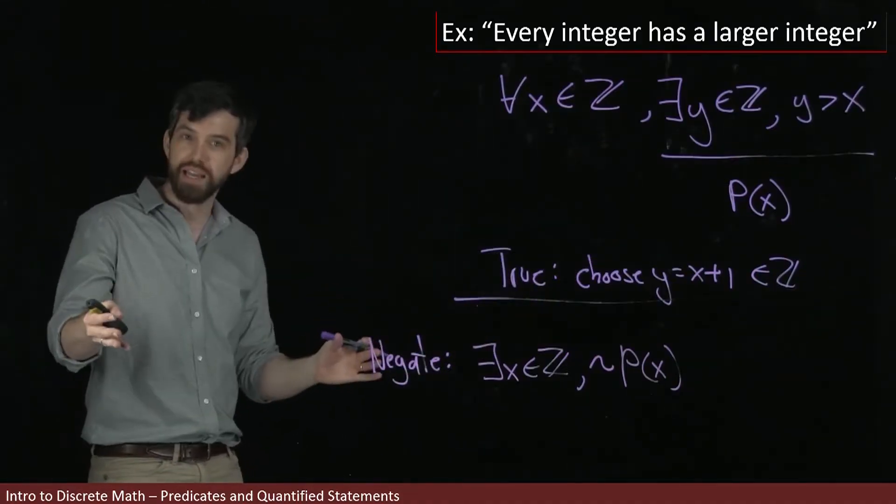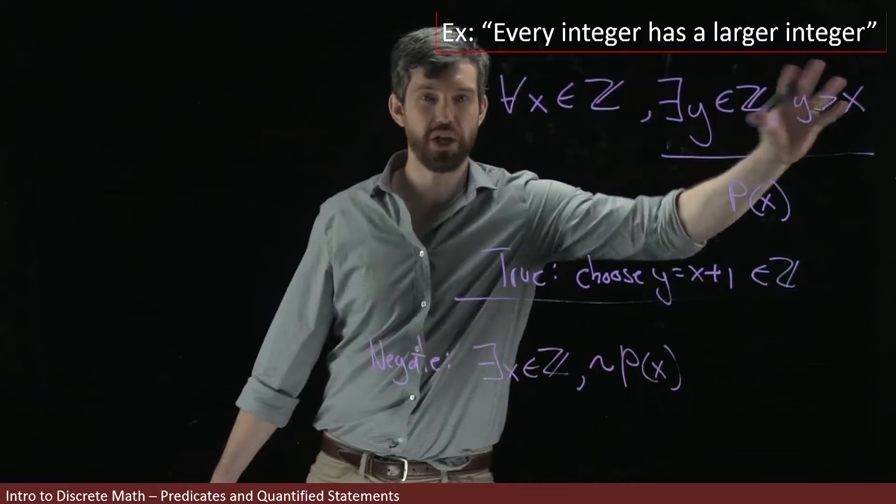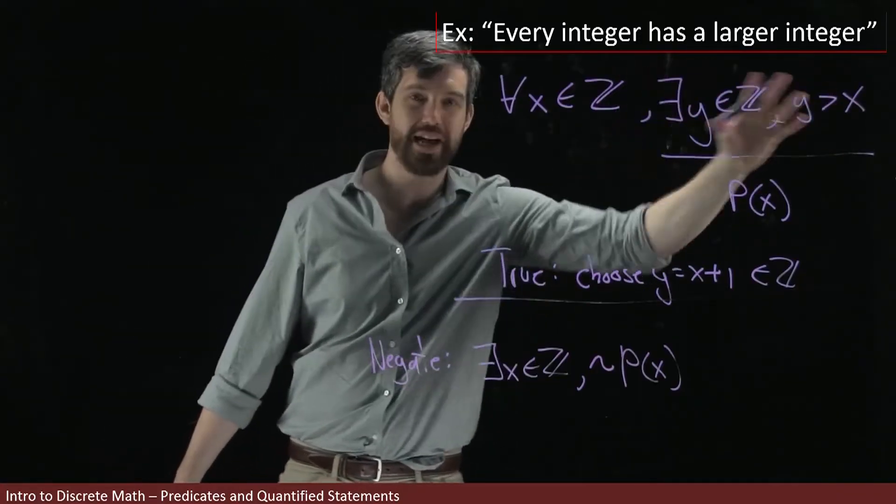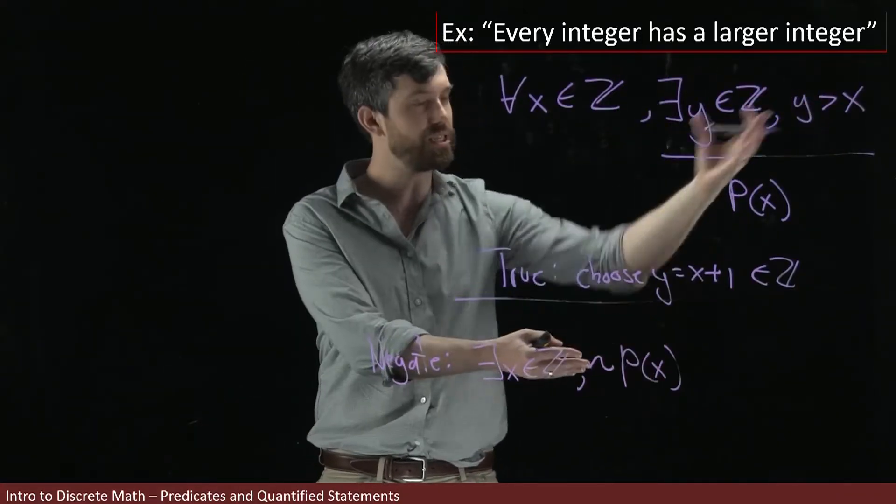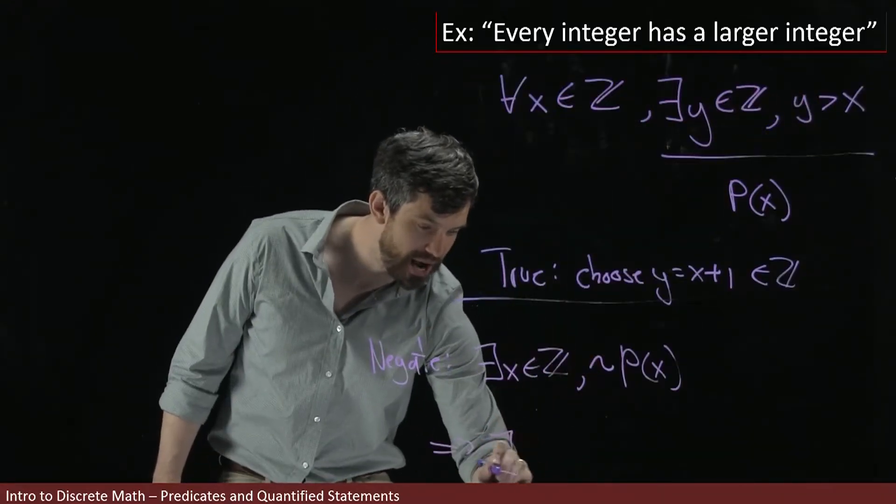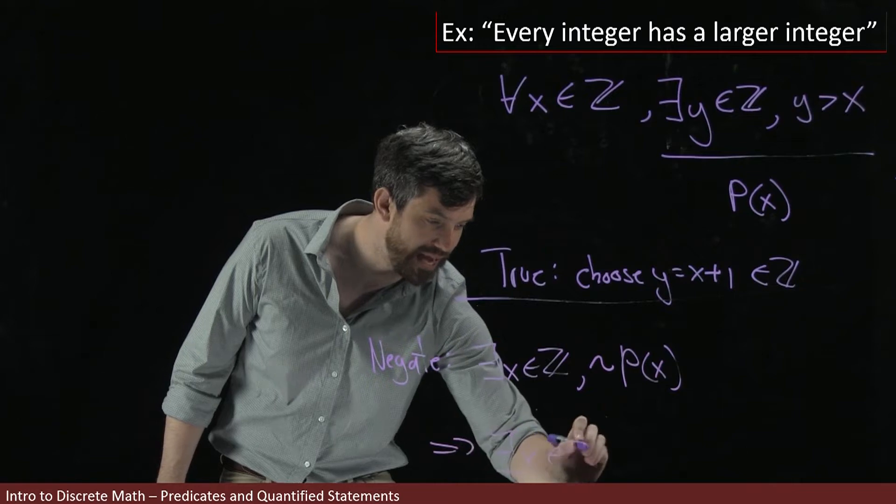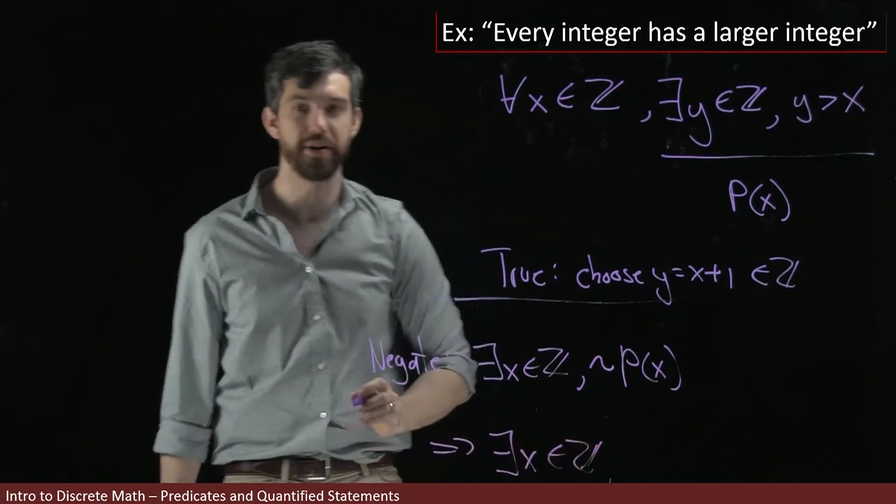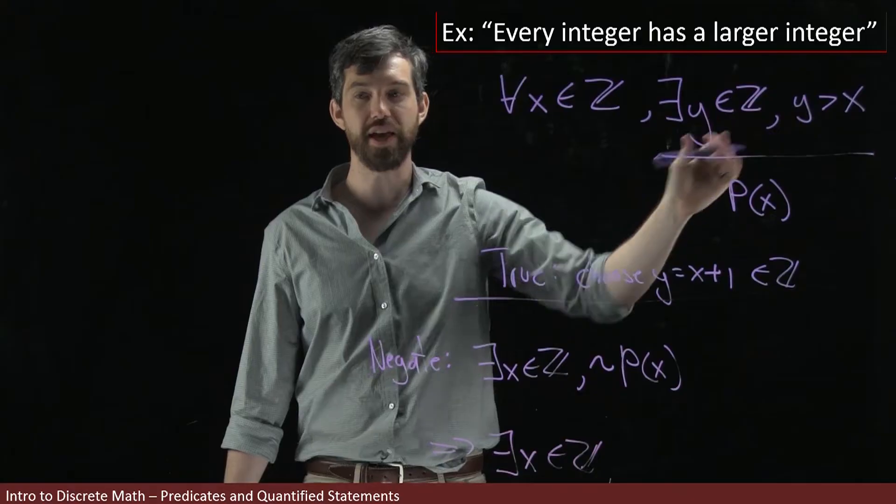But as we've seen, p of x is actually its whole own thing. So if I'm negating p of x, I can see, well, how does this apply to this larger predicate? In other words, I can come down here and say there exists an x in the integers. I'm copying in that spot. But now what I want to do is negate all of this.